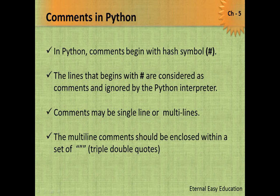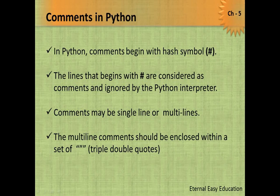You may wonder why we write comment lines in a program. Comments are very important while writing real-time programs for a project. In a project, many people are involved — like 400 to 500 people — and the work is split among them. Each person writes a program separately and everything is combined later, so code must be explained with documentation. Writing comments while creating a program is mandatory in real-time work.